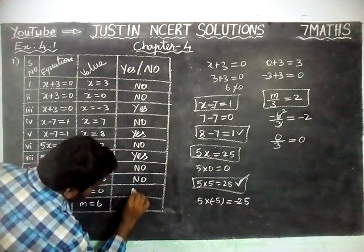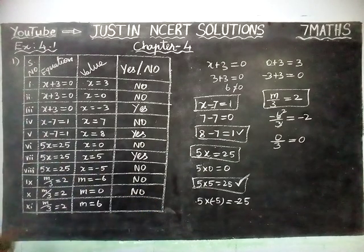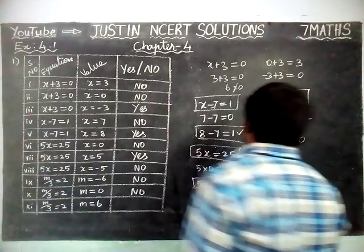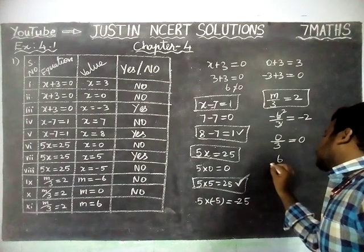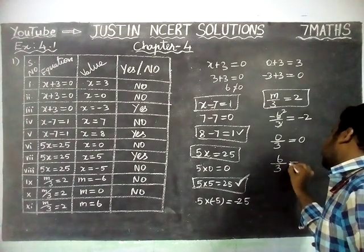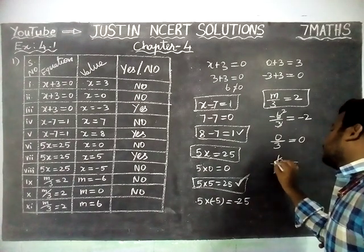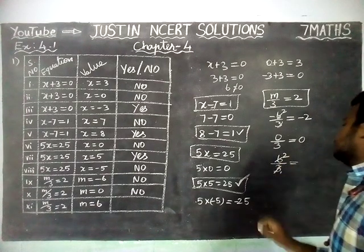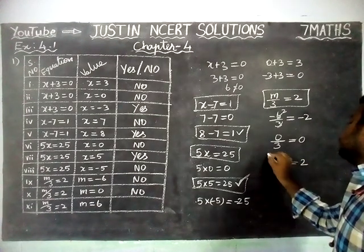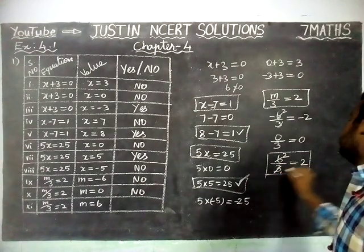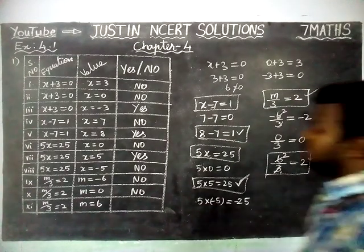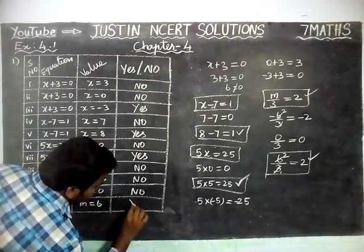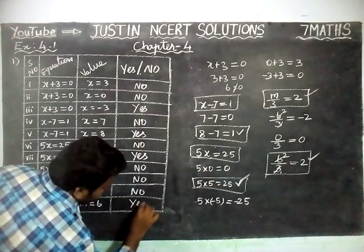Now the last question: M divided by 3 is equal to 2, M value is equal to 6. We are going to substitute — 6 divided by 3: 2 threes are 6, so the answer is 2. Now we got 2, which is the correct answer. This condition is satisfied, this equation is satisfied, so yes.